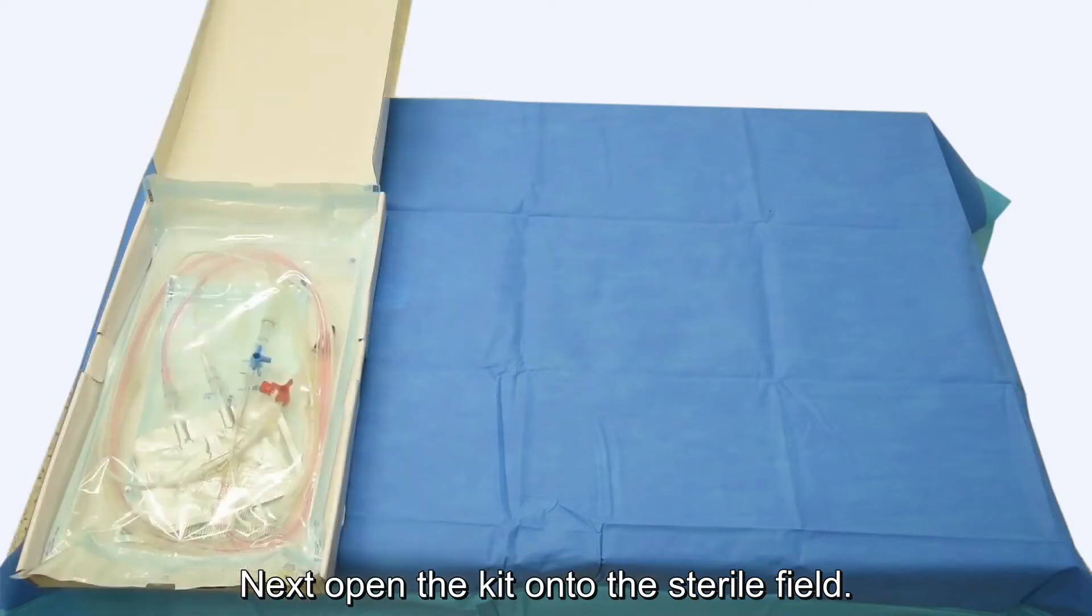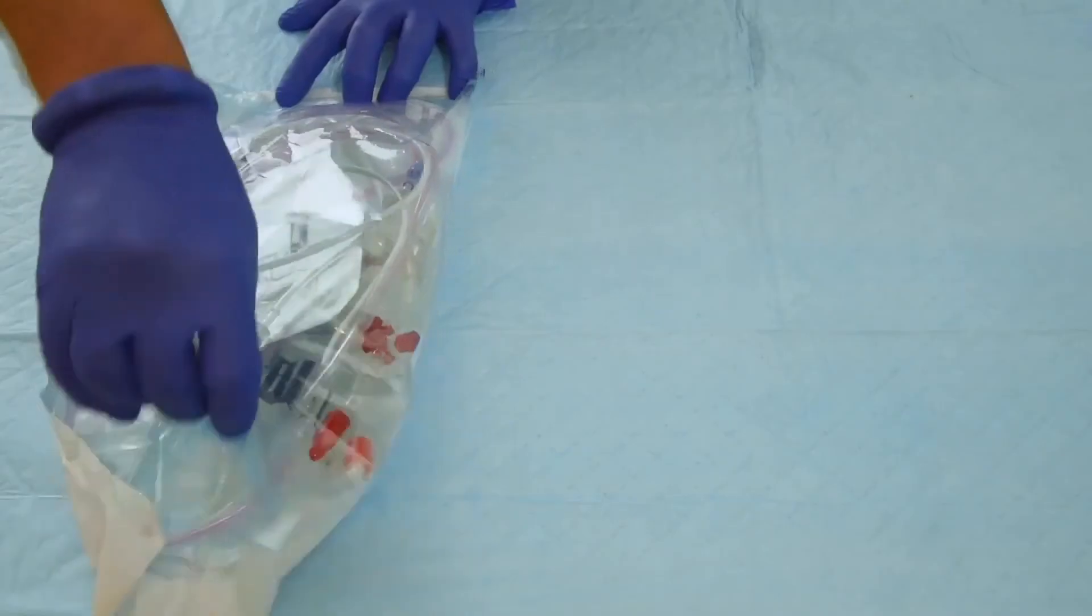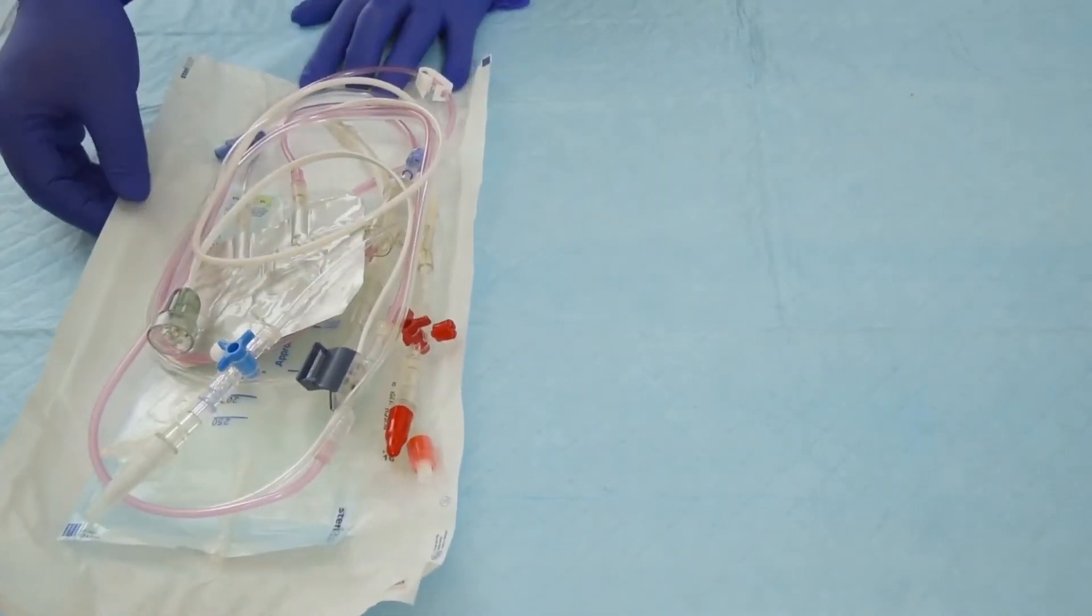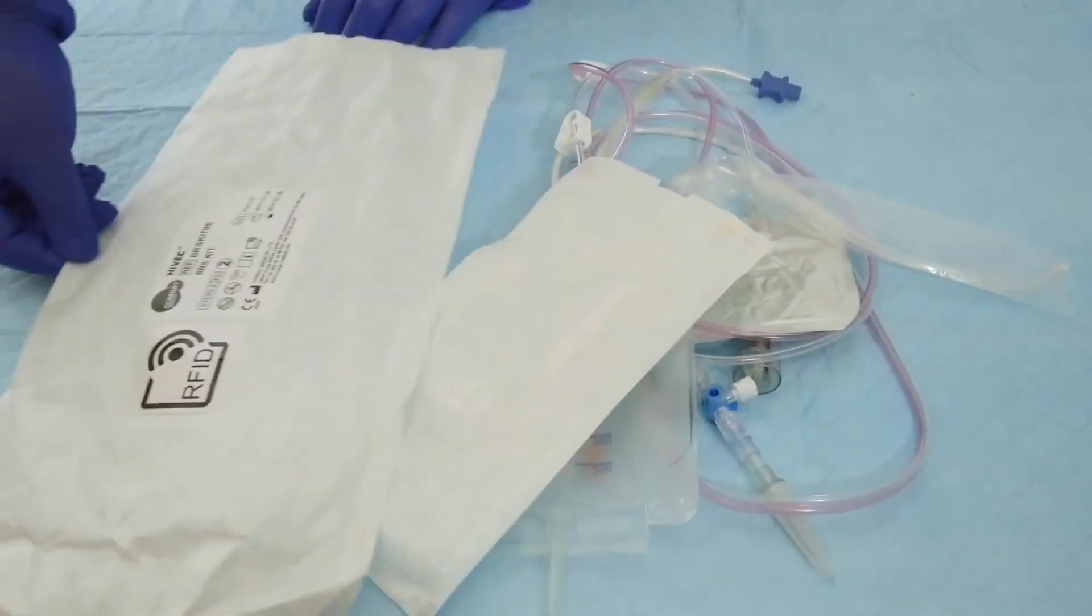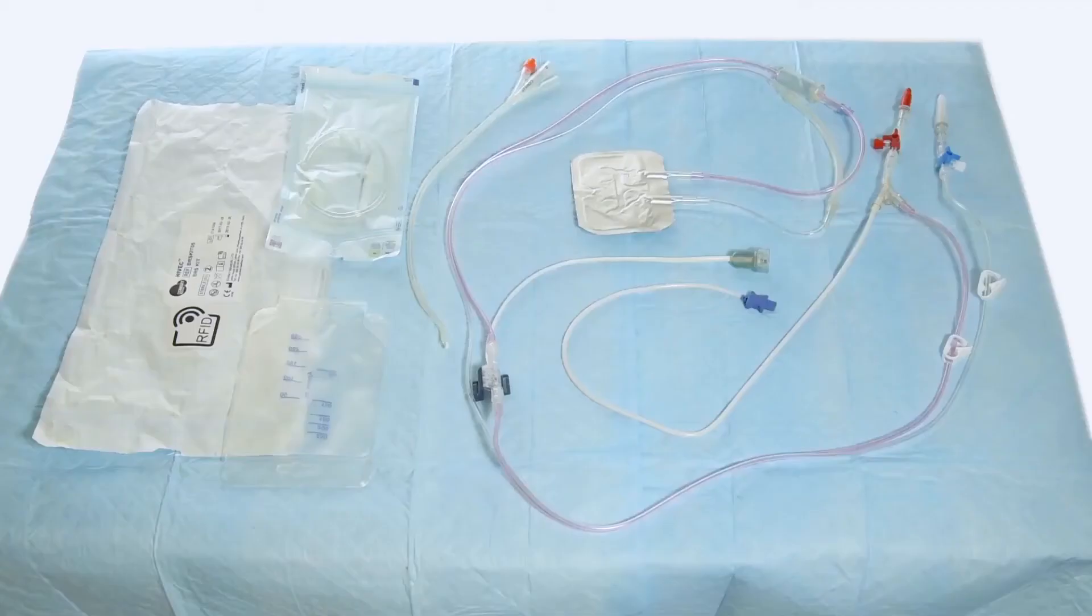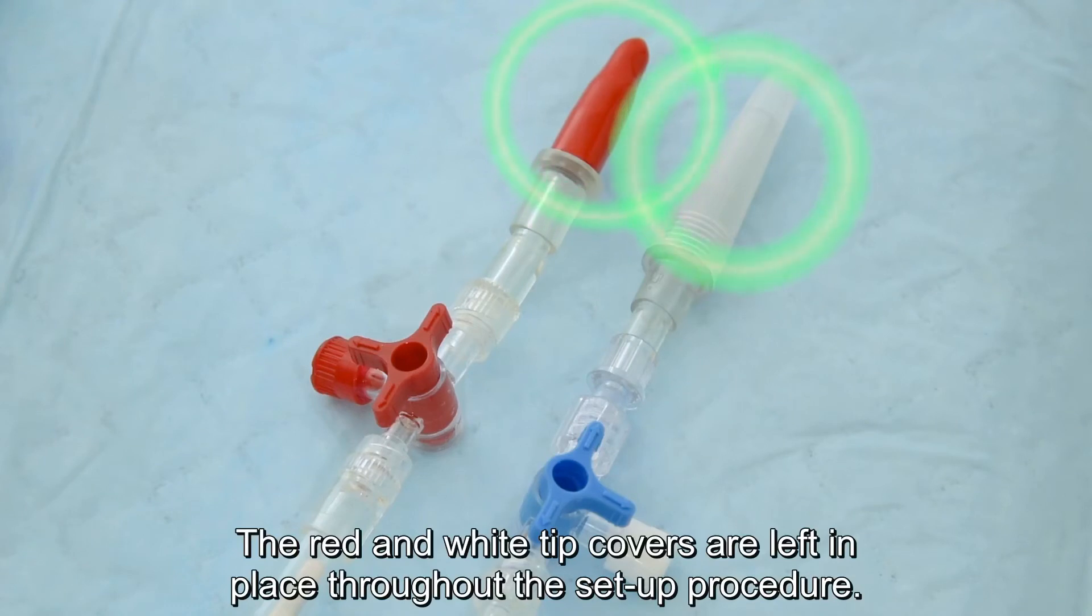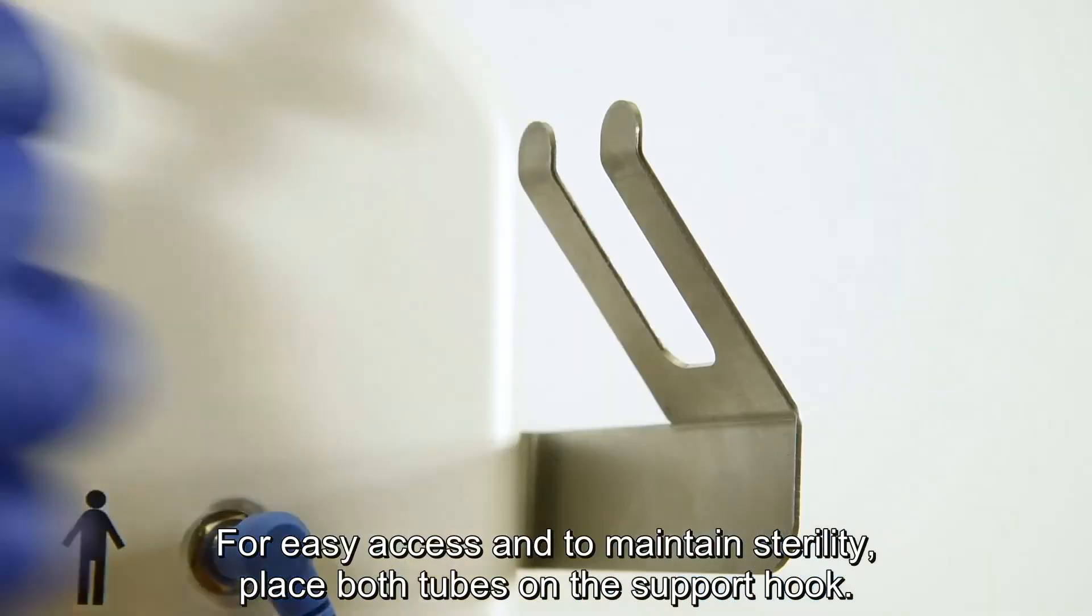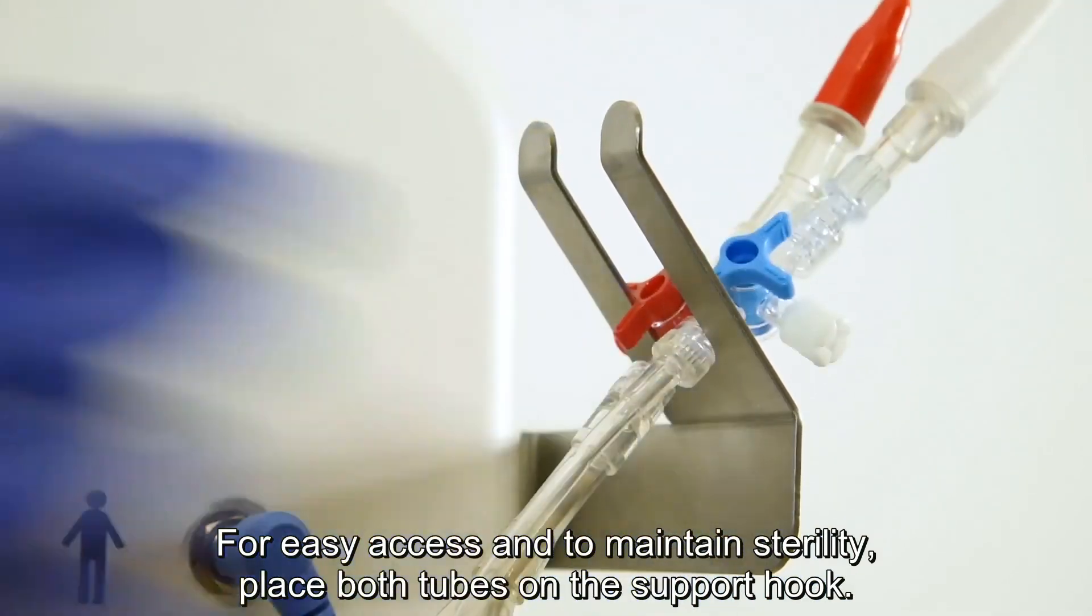Next, open the kit onto the sterile field. The red and white tip covers are left in place throughout the set-up procedure. For easy access and to maintain sterility, place both tubes on the support hook.